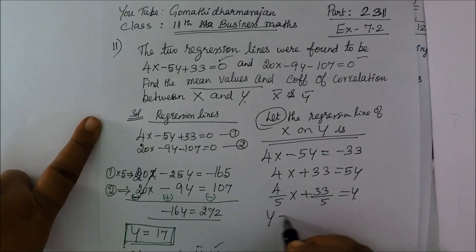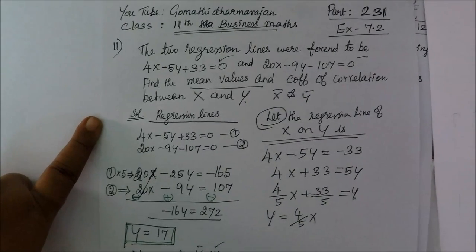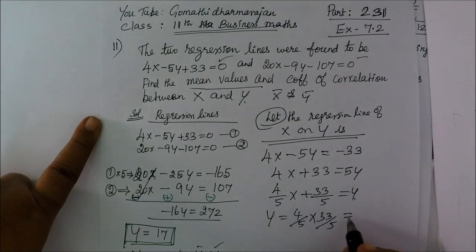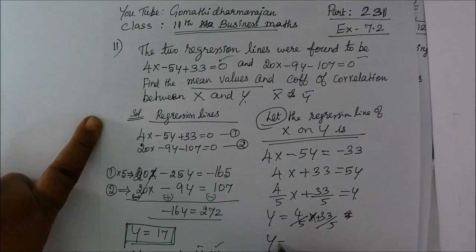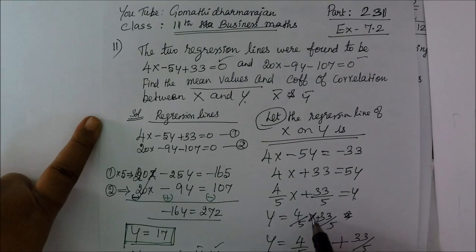So the standard formula gives byx equal to 4 by 5 x plus 33 by 5. Now we divide through by 5.